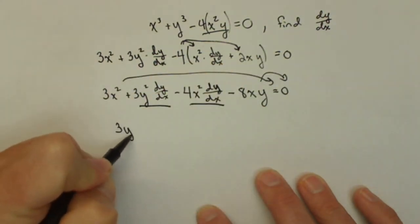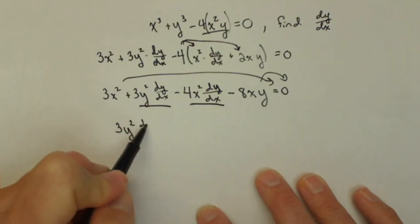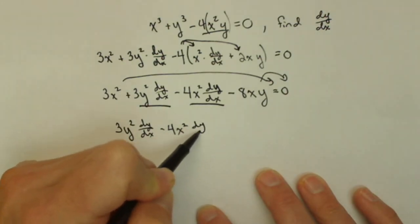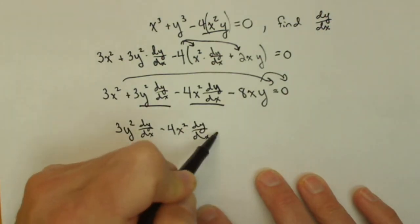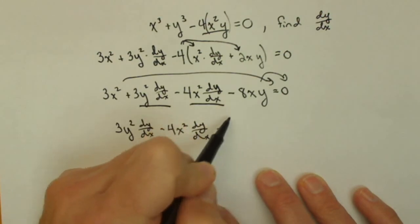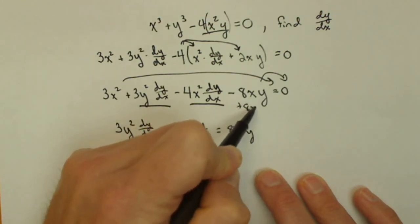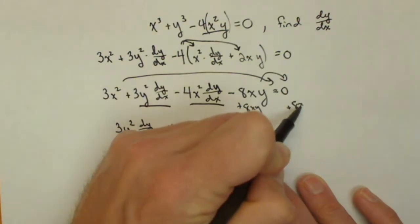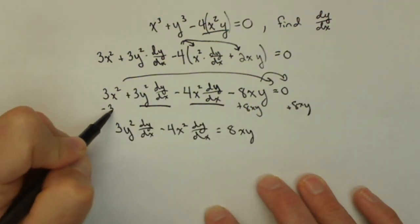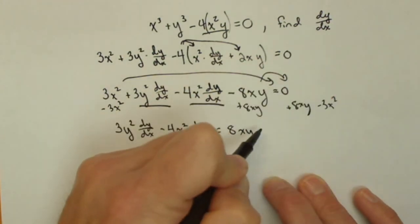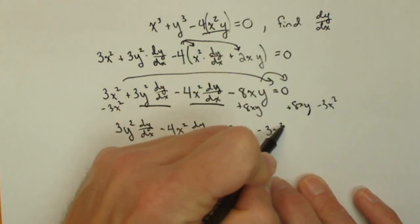So I have 3y² dy/dx - 4x² dy/dx equals, I'm adding 8xy to both sides, right, because I've got to add 8xy, and I'm subtracting 3x² off of both sides. So minus 3x².